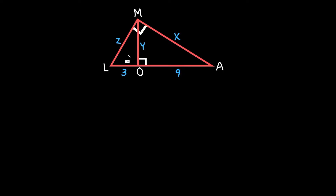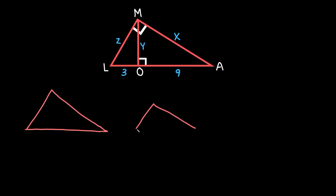So the first thing that you want to do is just redraw all three triangles and orient them the same way. So let's redraw this big triangle first and we're just going to leave it in the same orientation. Now let's draw this medium triangle but we're going to rotate it so it looks like the big one. And then we have this small right triangle, and again I'm going to rotate it and orient it so it looks like the original one.